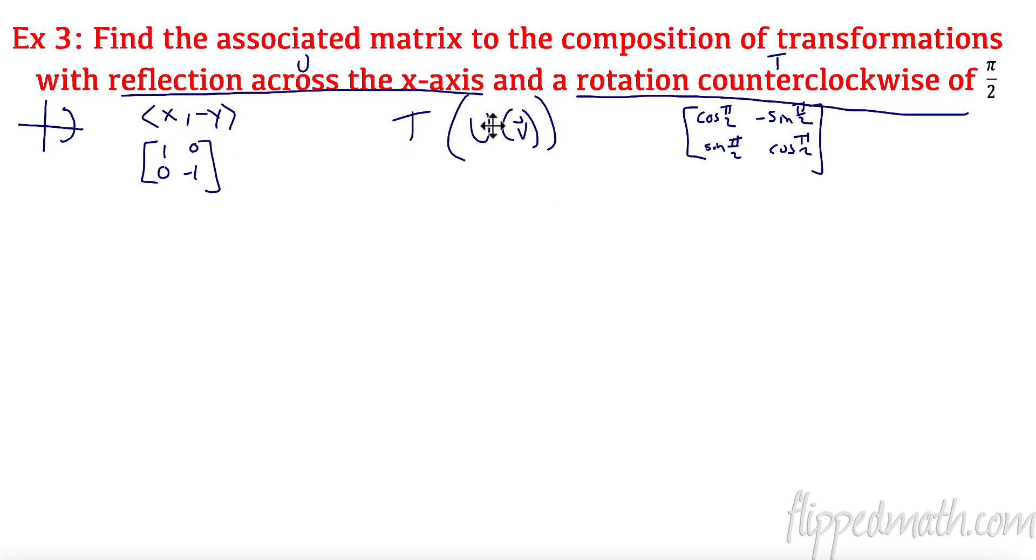So again, this one is going first. So that is actually my second matrix. Remember, it's my second matrix because it's the very first thing I would multiply and order matters with these matrices. So cosine of pi over 2 is 0, negative 1, 1, and 0. So let's multiply these out and see what we get.